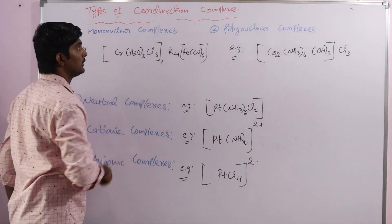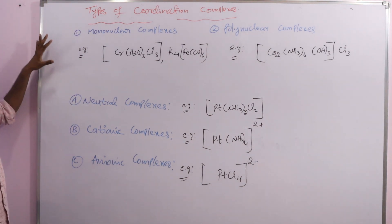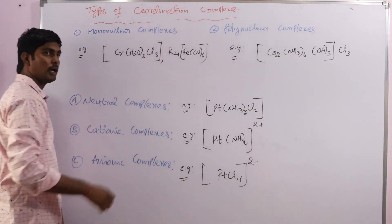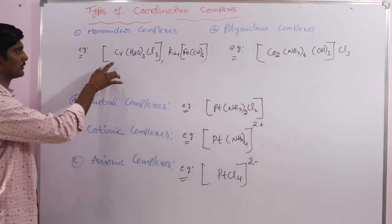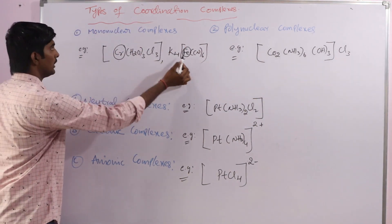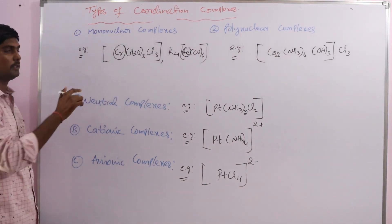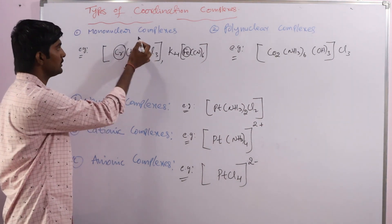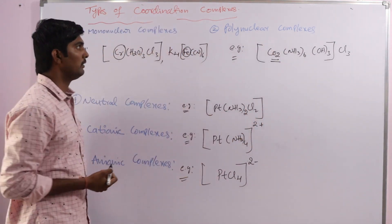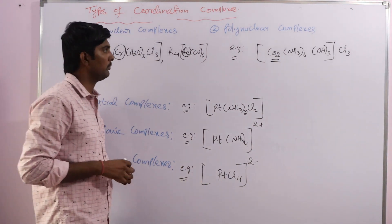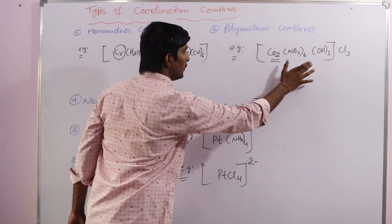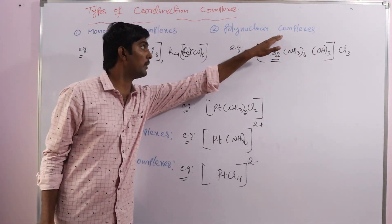Next, we discuss types of coordination complexes. Coordination complexes are majorly classified into two types: mononuclear complexes and polynuclear complexes. Mononuclear complexes are those which contain only one central metal atom or ion. Polynuclear complexes are those which contain more than one central metal atom or ion — maybe two, three, four, or five metal atoms.